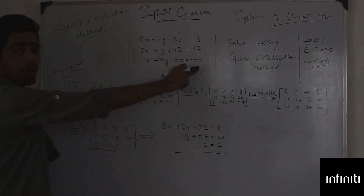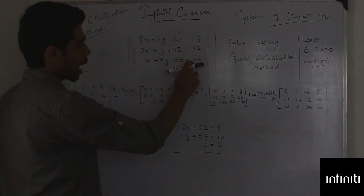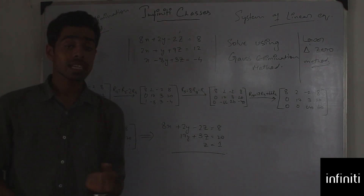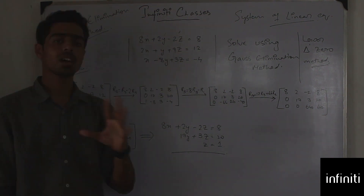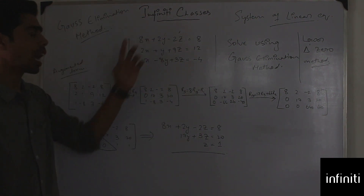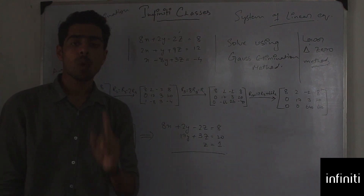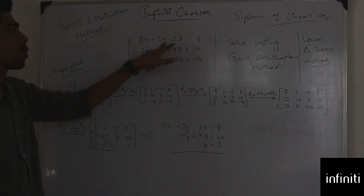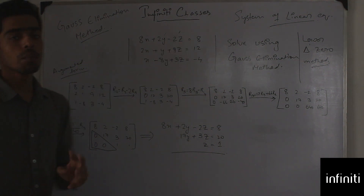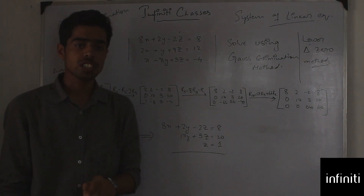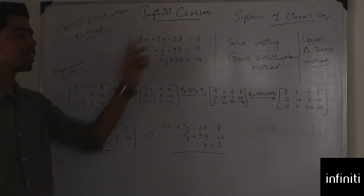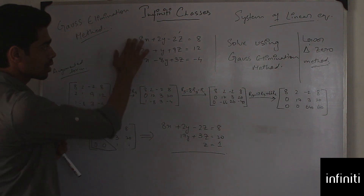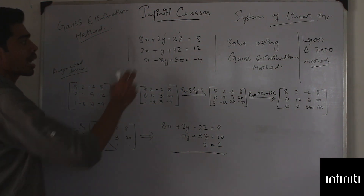If I want to find a single value, I need minimum one equation. Here I have to find x, y, and z, so I require a minimum of three equations to find x, y, and z. These are my three equations — equation 1, 2, and 3.